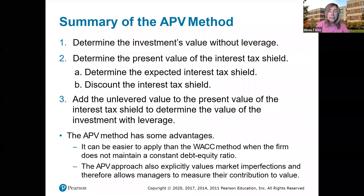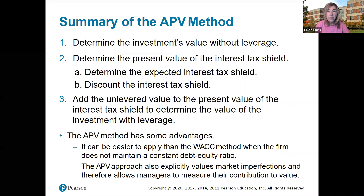To summarize the APV method: first, determine the investment's value without leverage. Then determine the present value of the interest tax shield — first determine the expected interest tax shield, then discount the interest tax shield. Finally, add the unlevered value to the present value of the interest tax shield to determine the value of the investment with leverage.